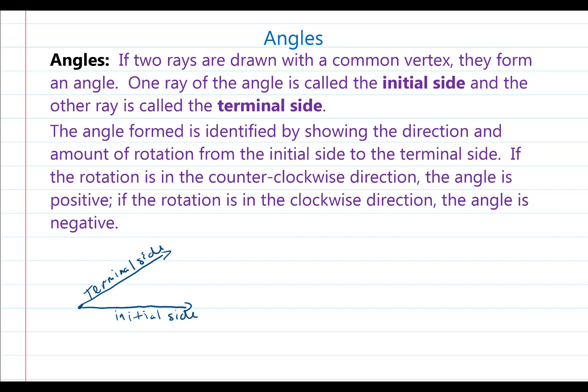I will do this with a curved arrow, starting with the initial side and drawing my curved arrow towards the terminal side. If the rotation is in the counterclockwise direction, the angle is positive. Because this starts at the initial side and has a counterclockwise direction, this is a positive angle.